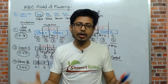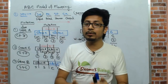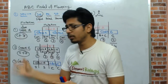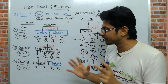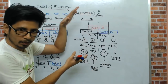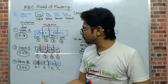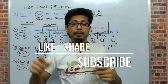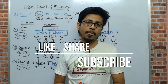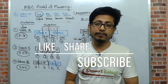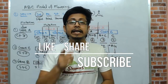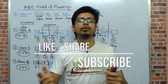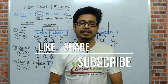That is the overall idea of the ABC model of flowering. If you remember this, you will never forget it — you don't need to memorize, just understand the ABC triangle with A and C at the bottom and B on top, and the mutations follow logically. If you like this video, please hit the like button, share it with your friends, and subscribe to our channel for more videos. Thank you, bye.